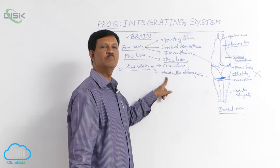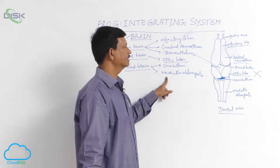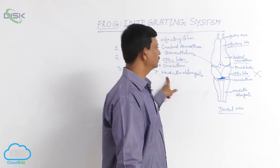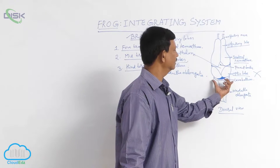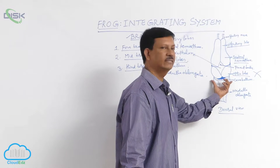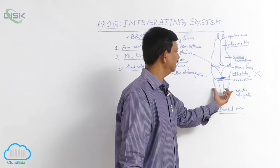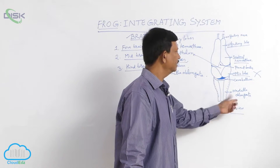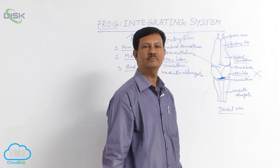The medulla oblongata is a very important organ of the brain. It is present at the posterior region, broad at the anterior region and gradually tapering, finally becoming the medulla oblongata.